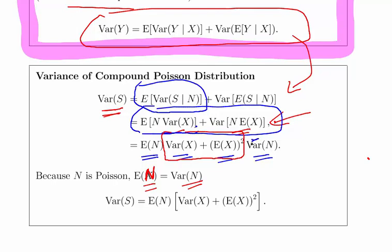We just factor it out, so the variance of S is the expected value of N times the variance of X plus the expected value of X squared.